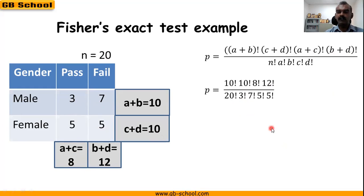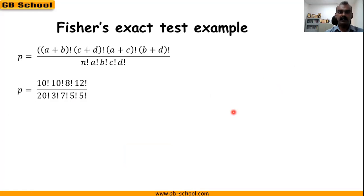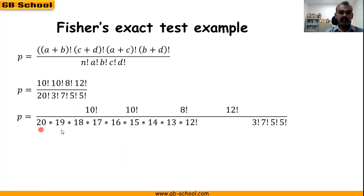When we try to solve this and reduce the factorials, we start from the highest in both numerator and denominator. In the numerator 12! is the highest; in the denominator 20! is the highest. We expand 20! as 20 × 19 × 18 × 17 × 16 × 15 × 14 × 13 × 12!, so the 12! cancels with 12! in the numerator.